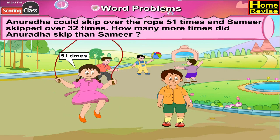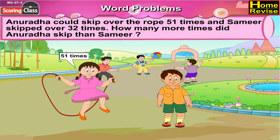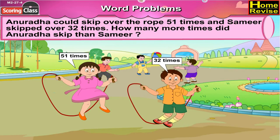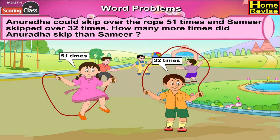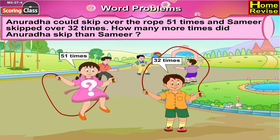Anuradha could skip over the rope 51 times and Samir skipped over 32 times. How many more times did Anuradha skip than Samir?